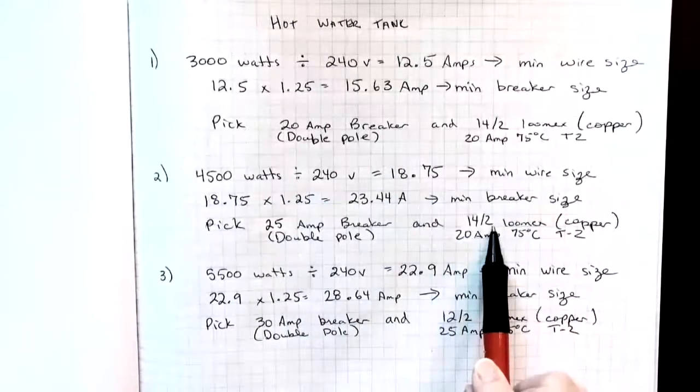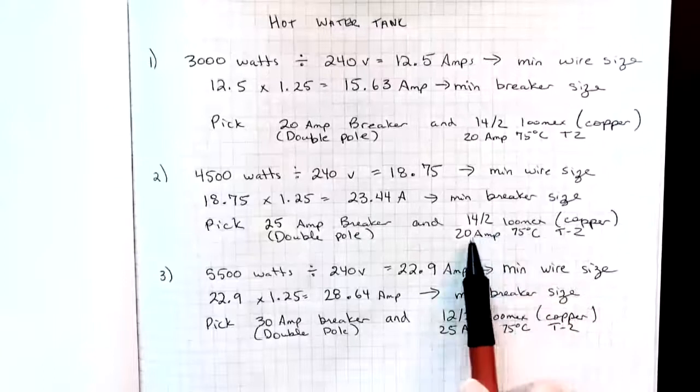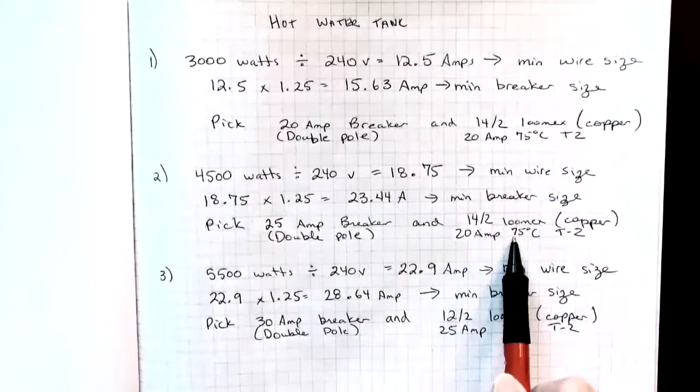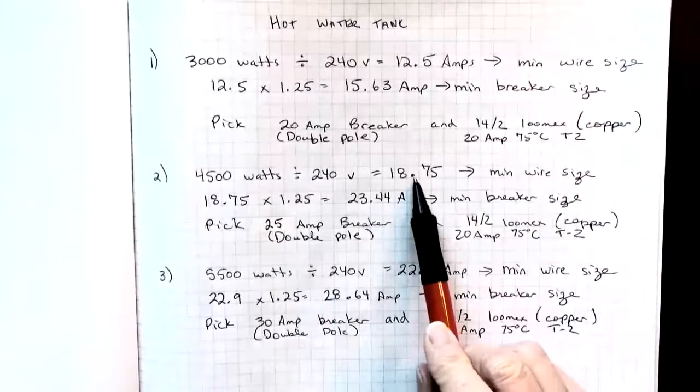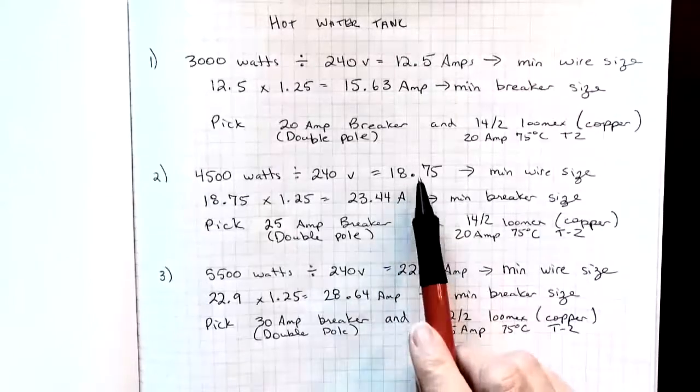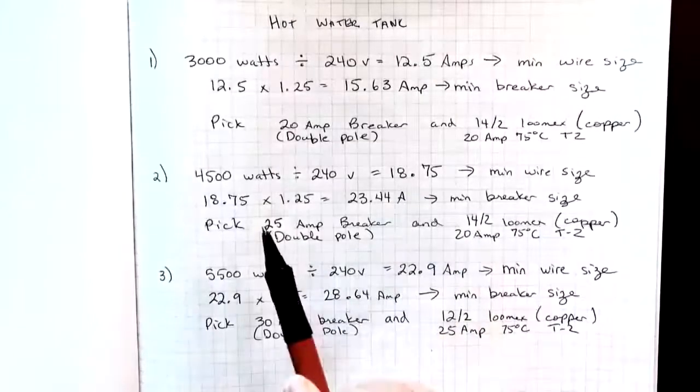Down here I picked the 14.2 Lumex copper because in table two, it tells us again that it's 20 amps in the 75 degree column which is enough to cover our load. Remember our ampacity of the wire always has to be at least as big as the load.